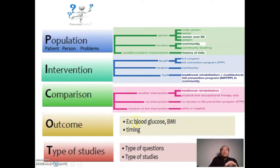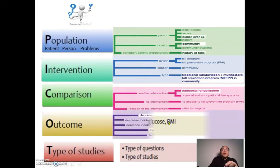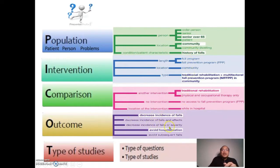With respect to the outcome, we talk about the effect of the intervention. For instance, to control blood glucose and BMI, the patient can be on a diet, exercise, or given medication, and the result would be a blood glucose level within normal limits and a good BMI. In another outcome example, the goal is a decrease in incidence and severity of falls, and ideally the patient can avoid hospitalization.